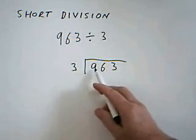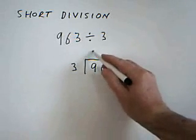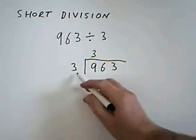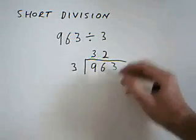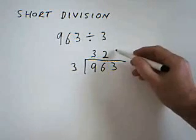3 goes into 9, 3 times, nothing left over. 3 goes into 6 twice. 3 goes into 3 once.